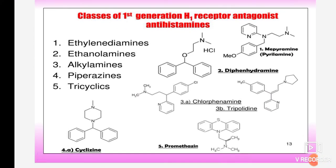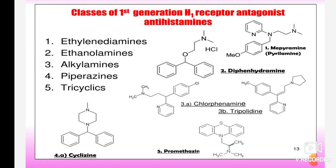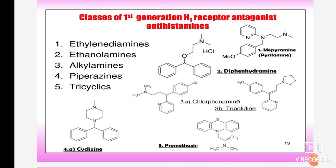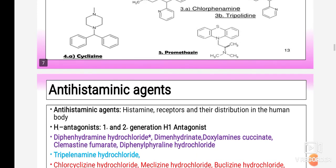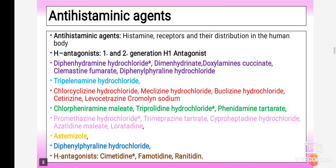Under the chemical class ethylene diamines, the drug is mepyramine. Under ethanolamines, it is diphenhydramine. Under alkyl amines there are different drugs — one mentioned is chlorphenamine. Under piperazine it is cyclizine, and under tricyclics it is promethazine.